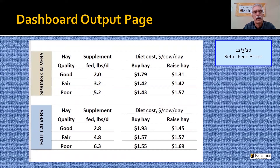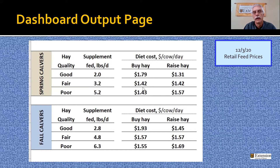We looked at various combinations of feeds and got a median amount of supplement needed. This may range — particularly on the poor feed, that may range from four and a half up to six pounds of supplement per day. The median price for that supplement per day was $1.79 per cow. As we got into fair and poor quality hay, the median price per head per day fell to $1.42–$1.43 per cow per day. That's the median price based on today's costs. If we raise hay, as we get poorer quality hay, the need for supplementation goes up, and the cost per head per day for feeding goes up.